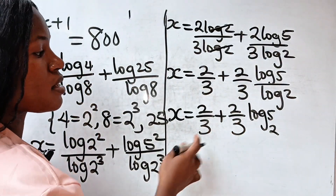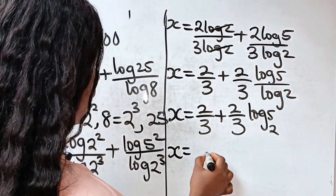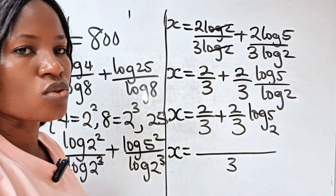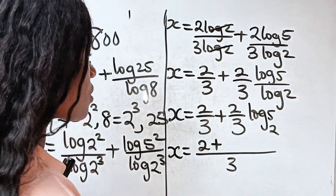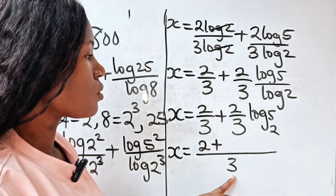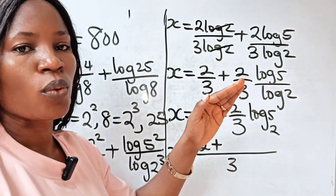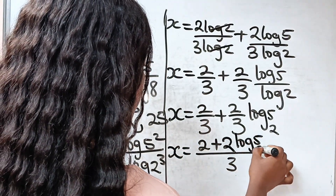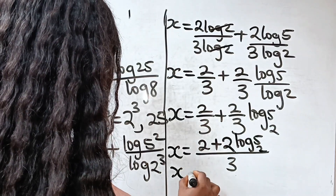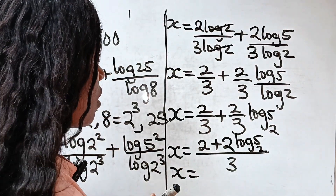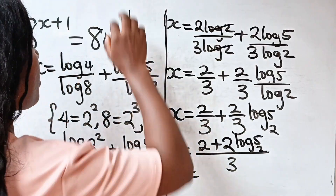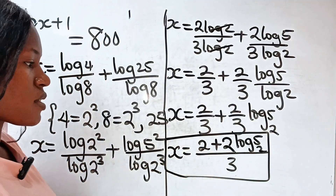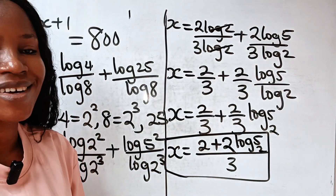Since they share the same denominator, we can express this as: 2 log 5 base 2. So now we have x is equal to this value. We cannot simplify this further, so this is our final answer for x.